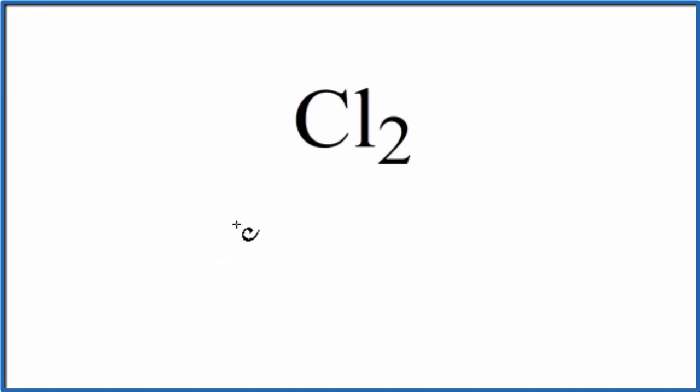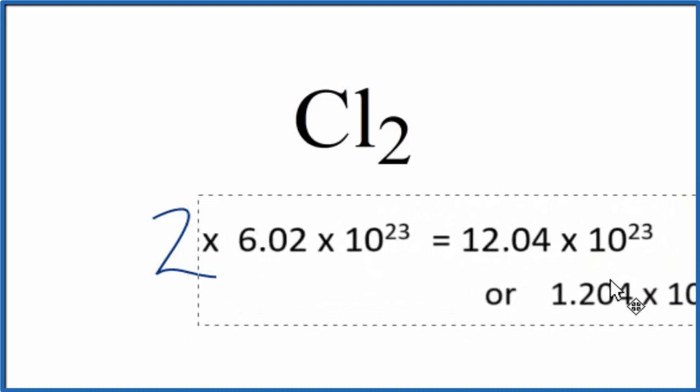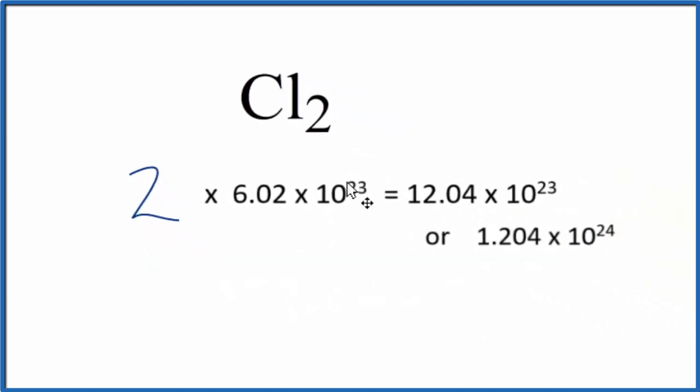And you want to know how many atoms are in one mole of Cl2. So we have our two here, and we're going to multiply that by Avogadro's number, which tells us the number of Cl atoms in one mole of Cl2.